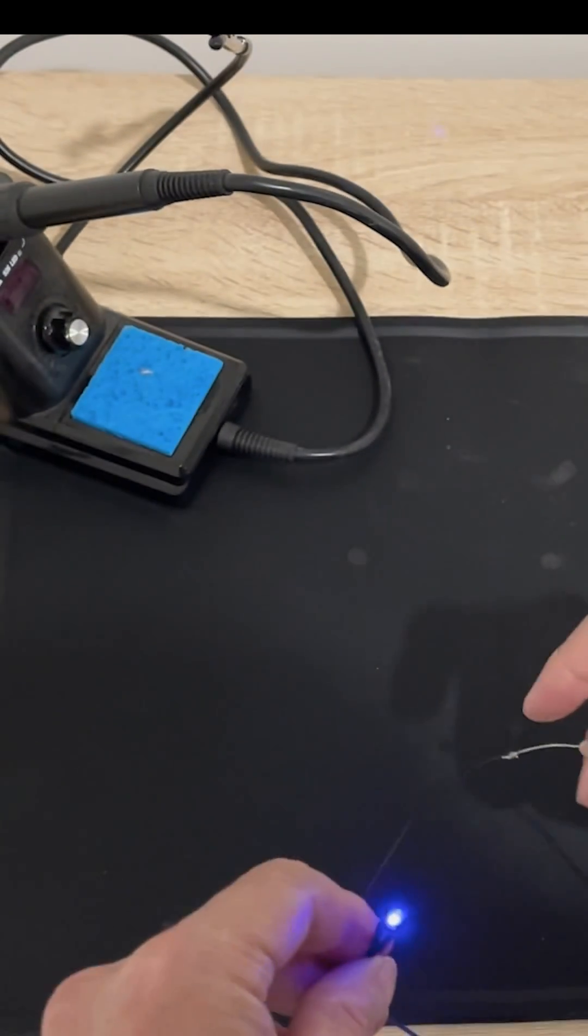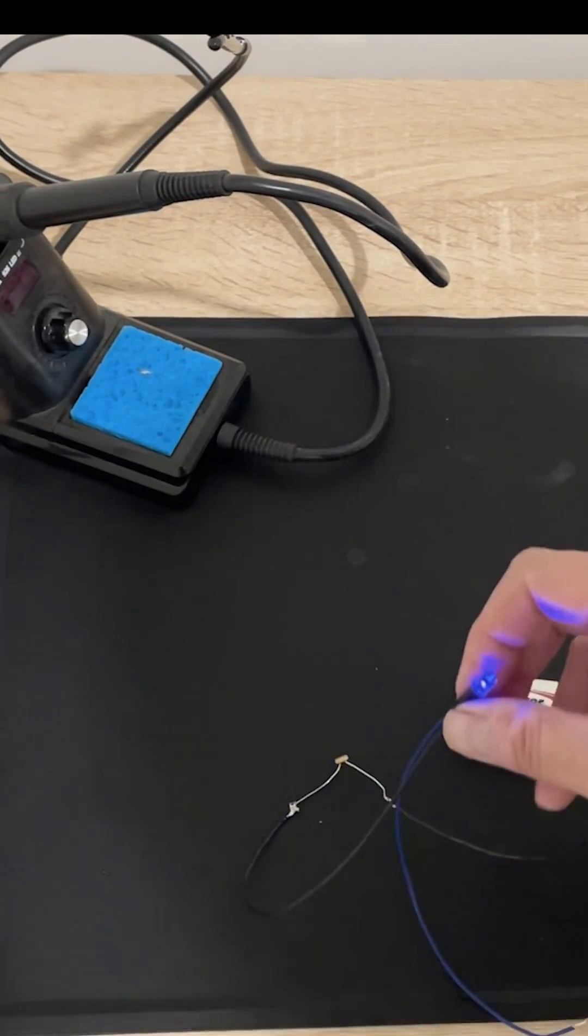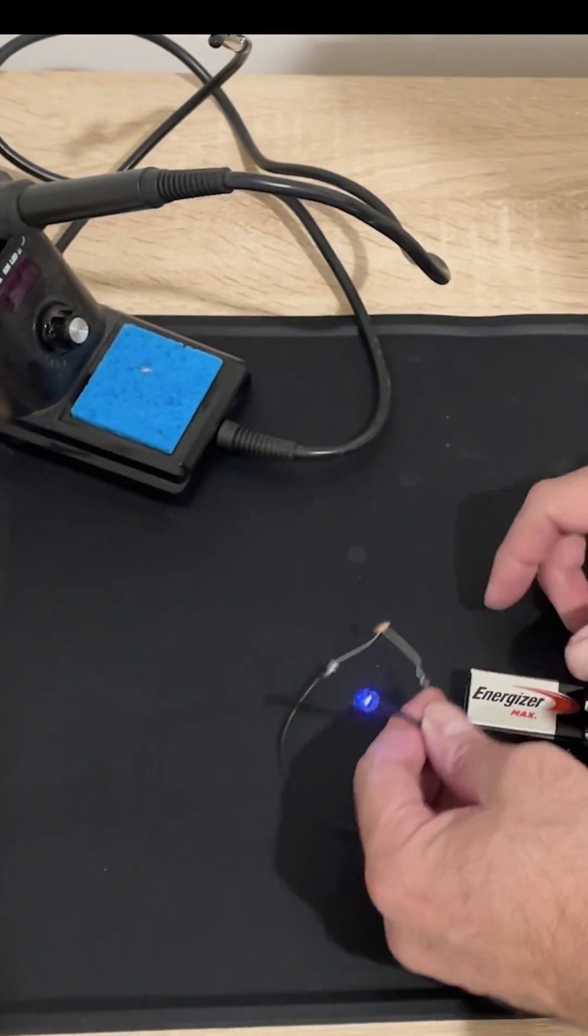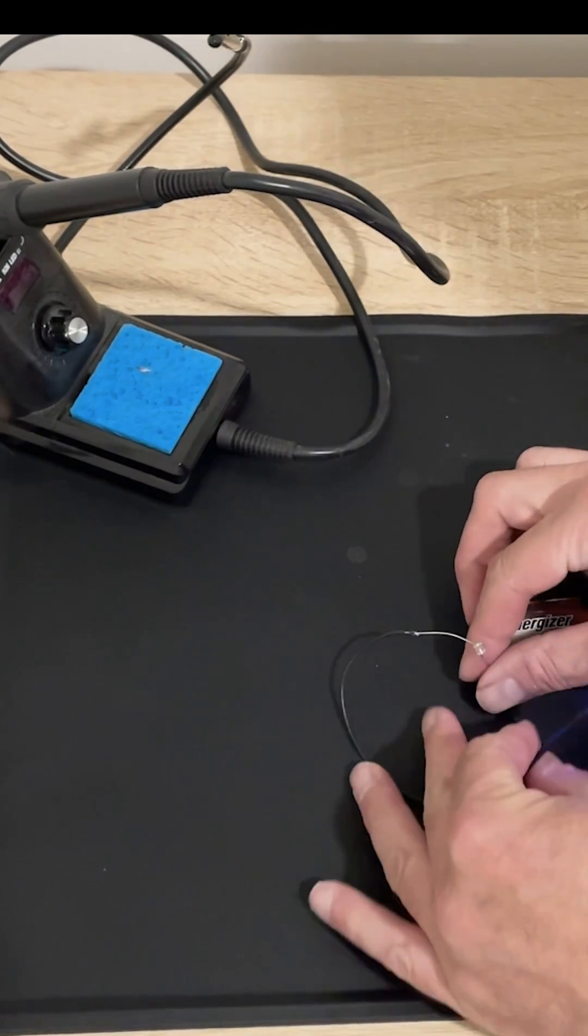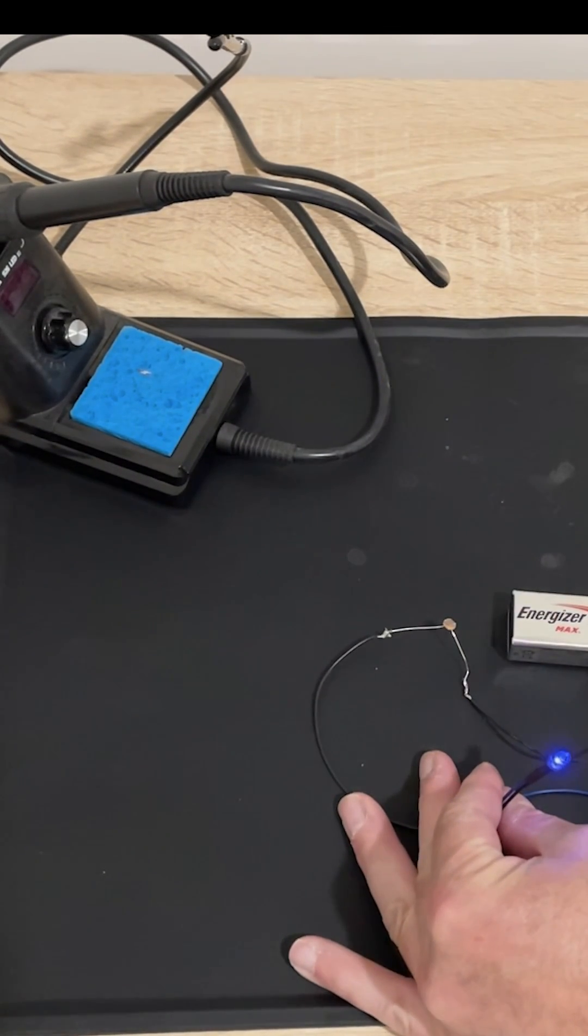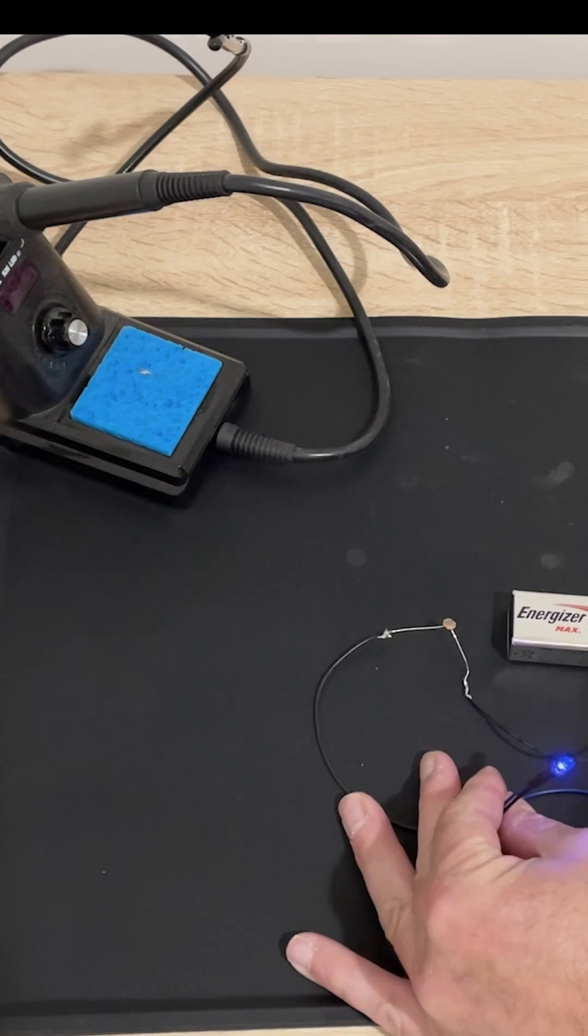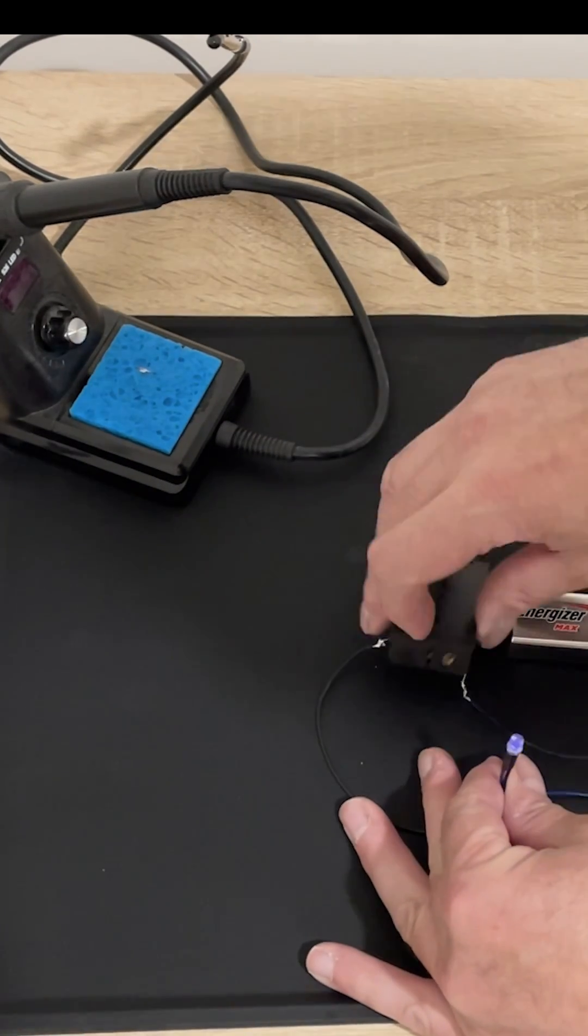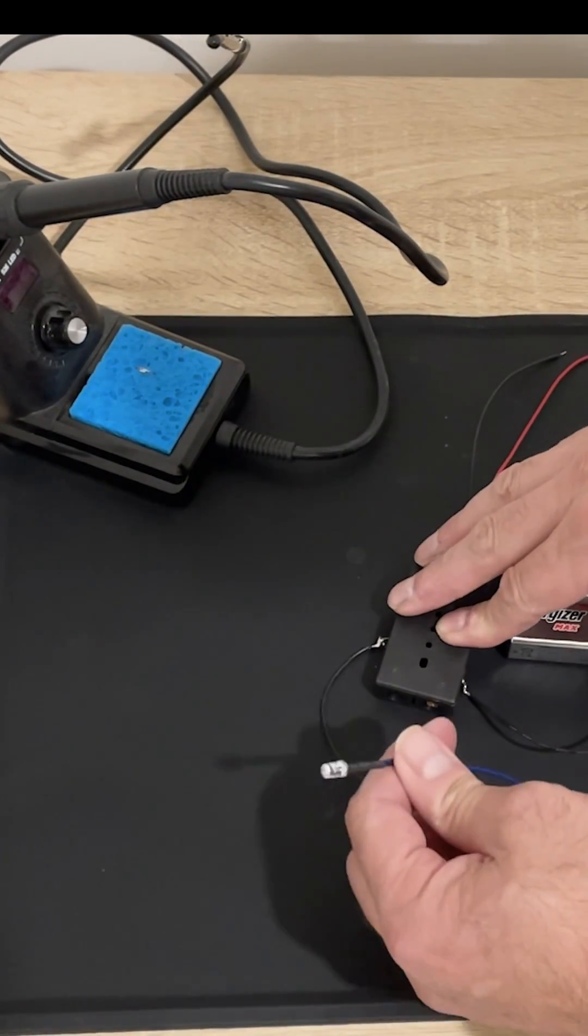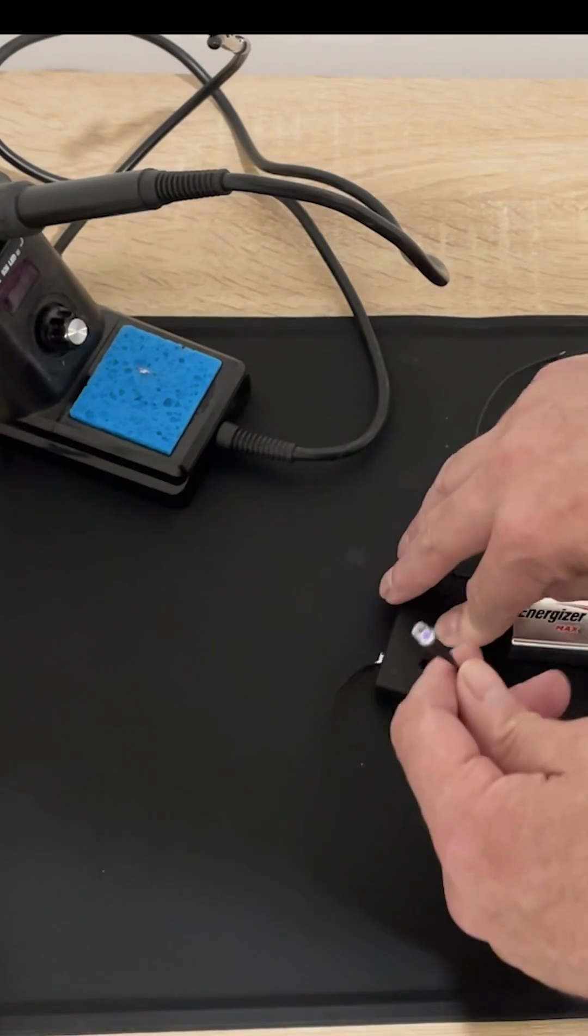So if we completely cover it, just grab something to cover it with. If we completely cover it up and block out all the light, we see the LED goes completely dark.